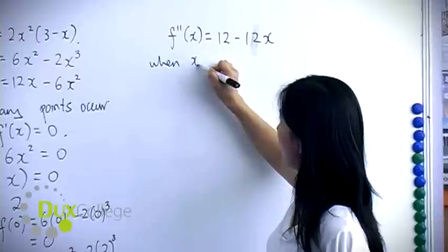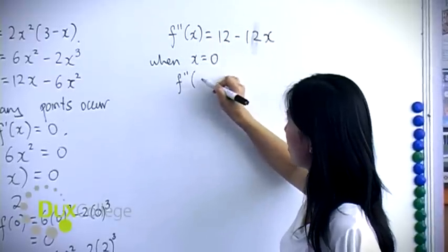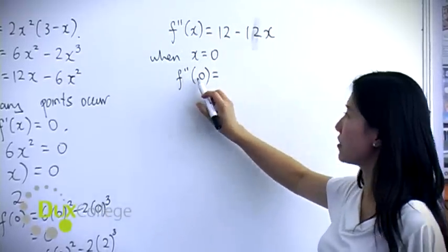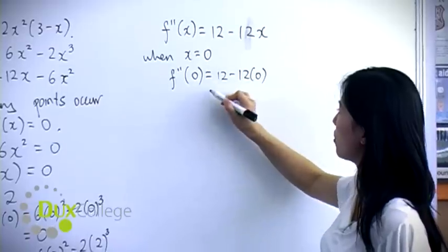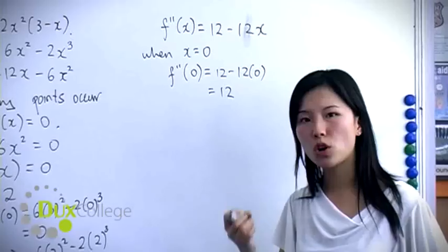So when x = 0, f''(0) = 12 - 12(0) = 12.